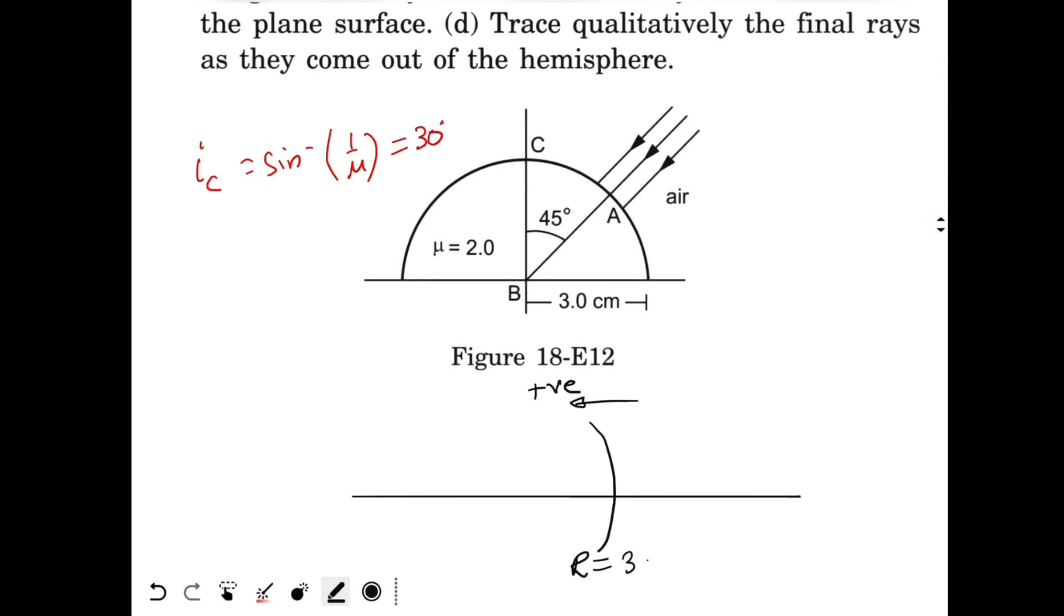Radius is 3 cm. Light rays are coming parallel to the principal axis. Since they are coming parallel to each other, they are coming from infinity. So we could say that U will be infinity for the rays.